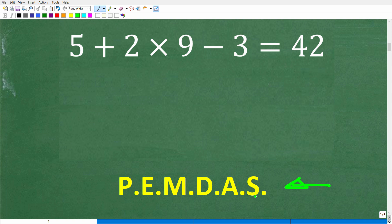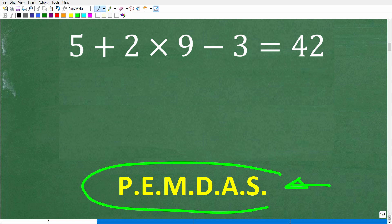This says PEMDAS, which represents the order of operations. The correct order of operations in mathematics is when we follow this checklist. So what is an operation in mathematics? Things like addition, subtraction, multiplication, division, and even powers — it's basically the things that we can do with numbers.